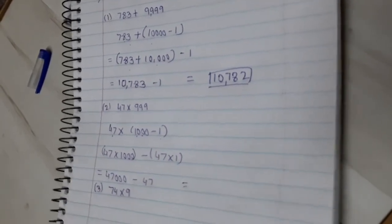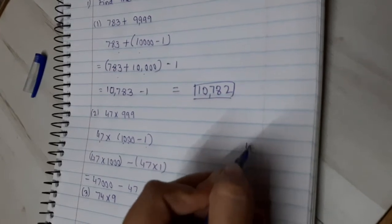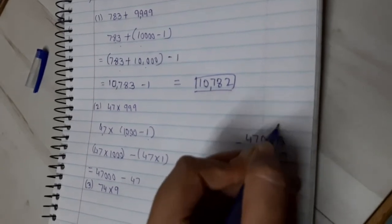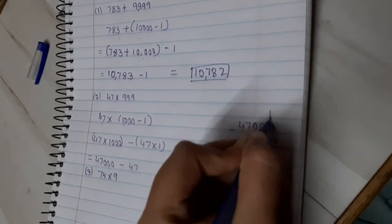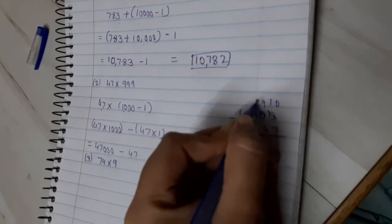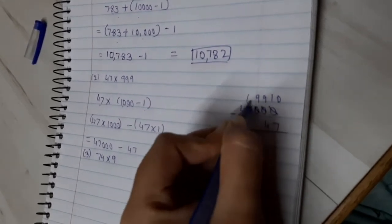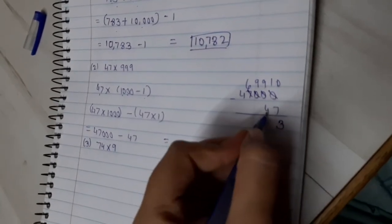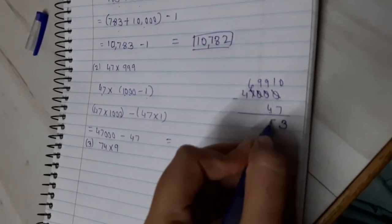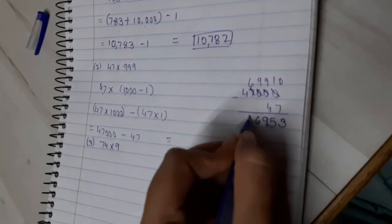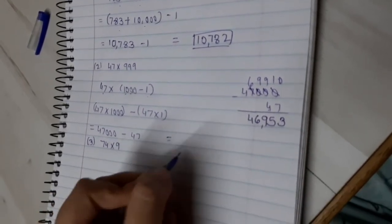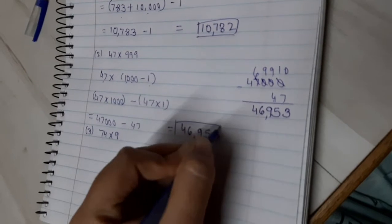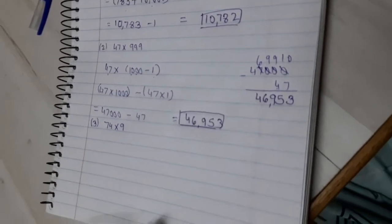So what will be your final answer? Let us subtract: 47,000 minus 47. This 0 will become 10, this will become 9, this will become 9, and this will become 6. So 10 minus 7 gives you 3, 9 minus 4 gives you 5, then 9, 6, and 4 as they are. So your answer will be 46,953.